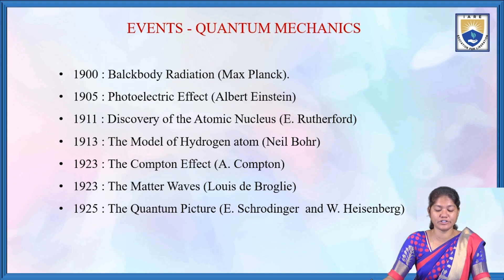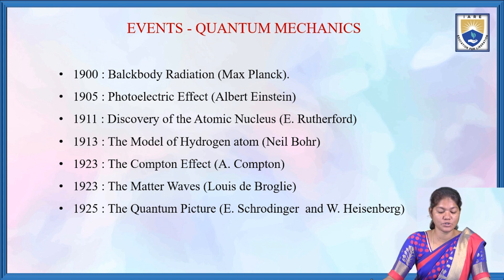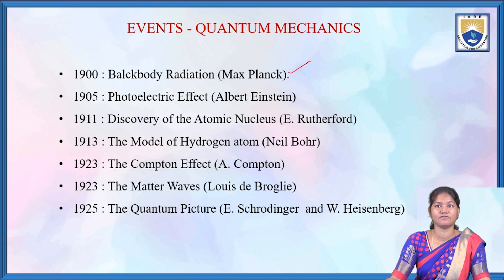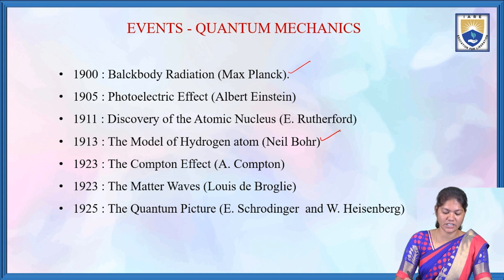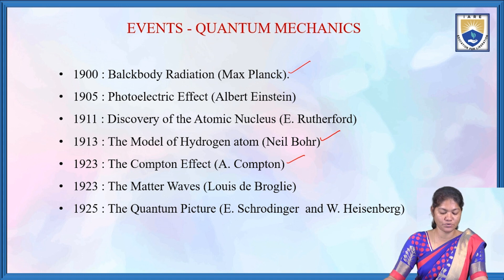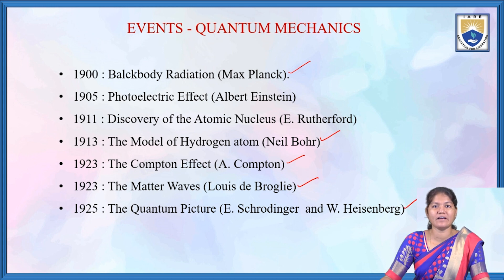After 1900, what events happened in quantum mechanics? In 1900, Max Planck gave the black body radiation. In 1905, the photoelectric effect was given by Albert Einstein. In 1911, discovery of the atomic nucleus by E. Rutherford. In 1913, the model of hydrogen atom by Niels Bohr. In 1923, the Compton effect by A. Compton. Also in 1923, matter waves given by Louis de Broglie. And in 1925, the quantum picture came, given by E. Schrödinger and W. Heisenberg.